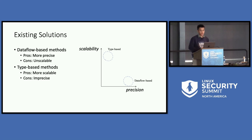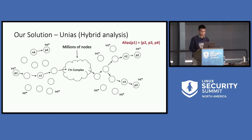In summary, dataflow-based analyses are more precise but less scalable, and type-based methods are more scalable but less precise. We hypothesize that there is a new solution space which is relatively precise and relatively scalable. That's where our solution is — UniS. Generally speaking, UniS is a hybrid alias analysis that combines dataflow analysis and type analysis. We will illustrate our idea with a simple example.